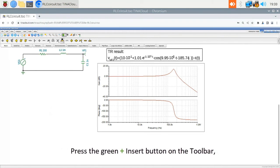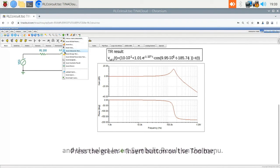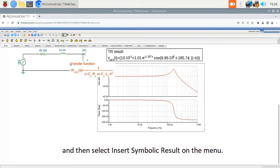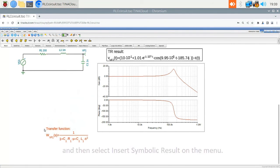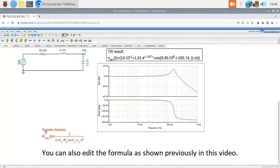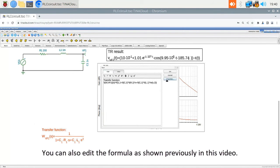We can also add it to the Schematic Editor window. Press the green Insert button on the toolbar, and then select Insert Symbolic Result on the menu. You can also edit the formula as shown previously in this video.